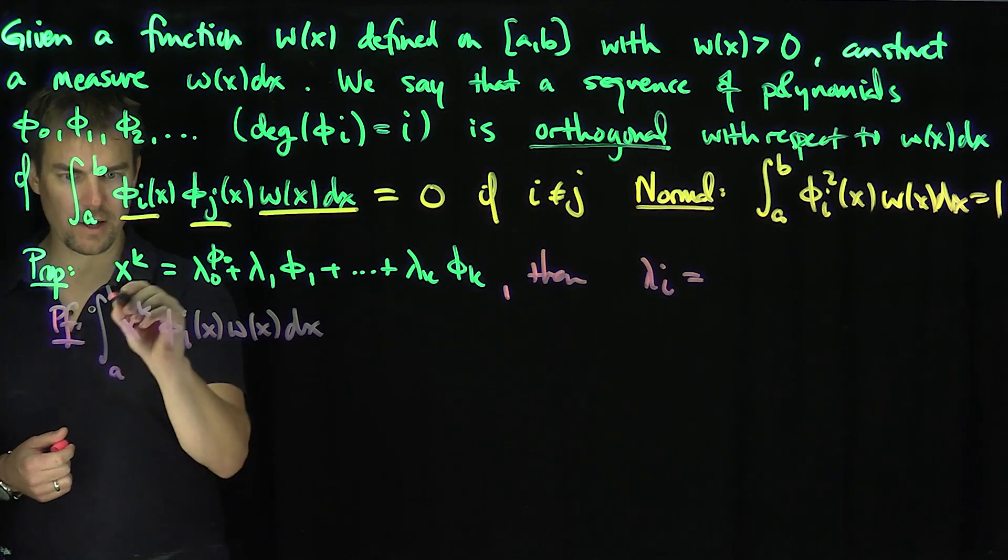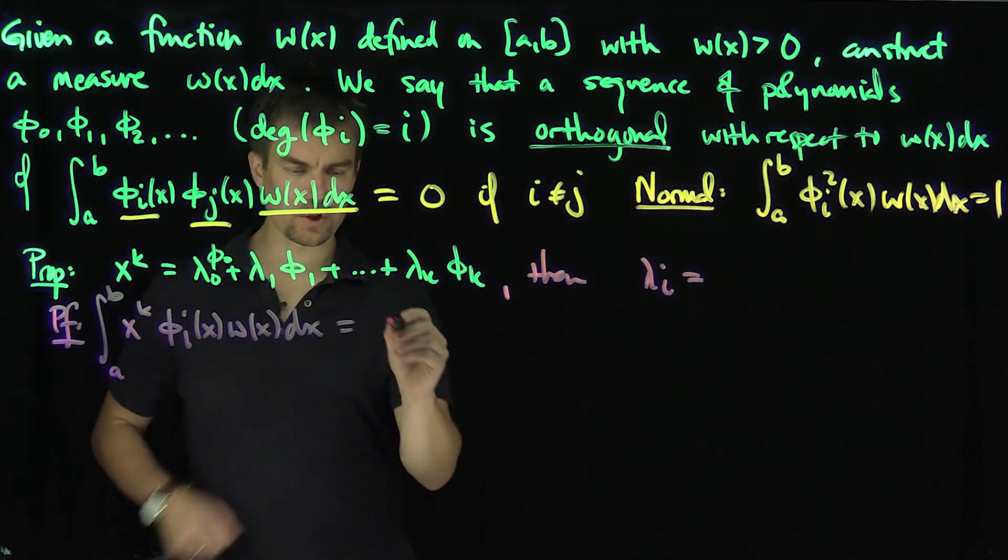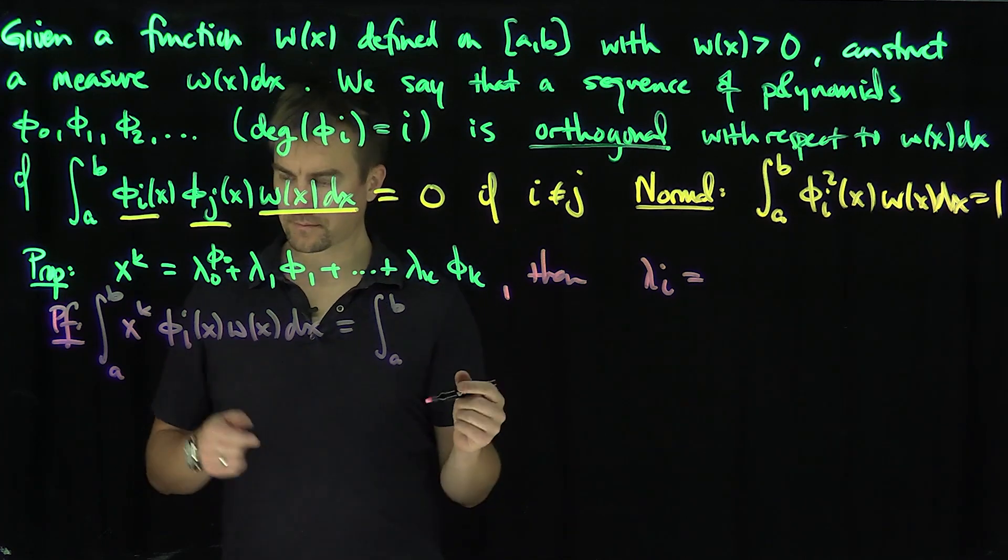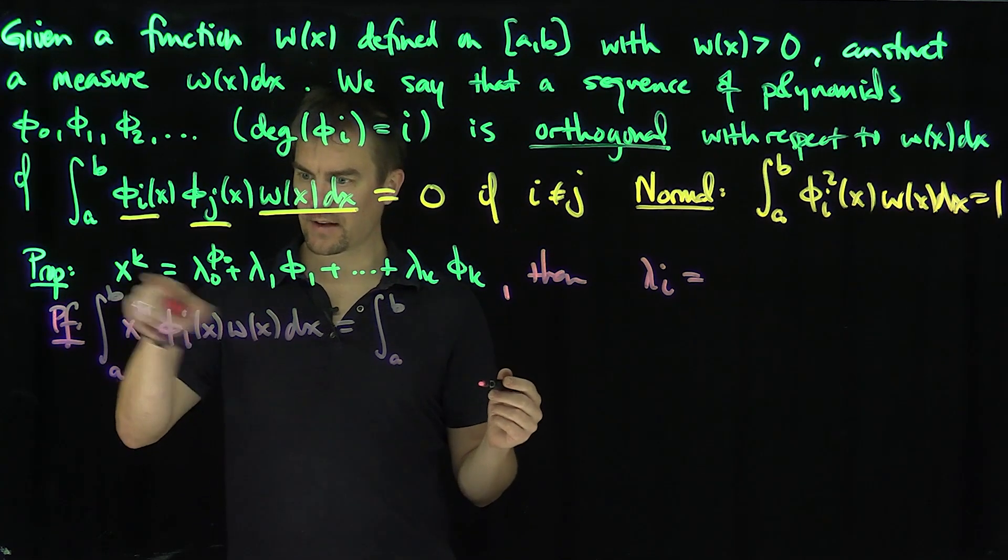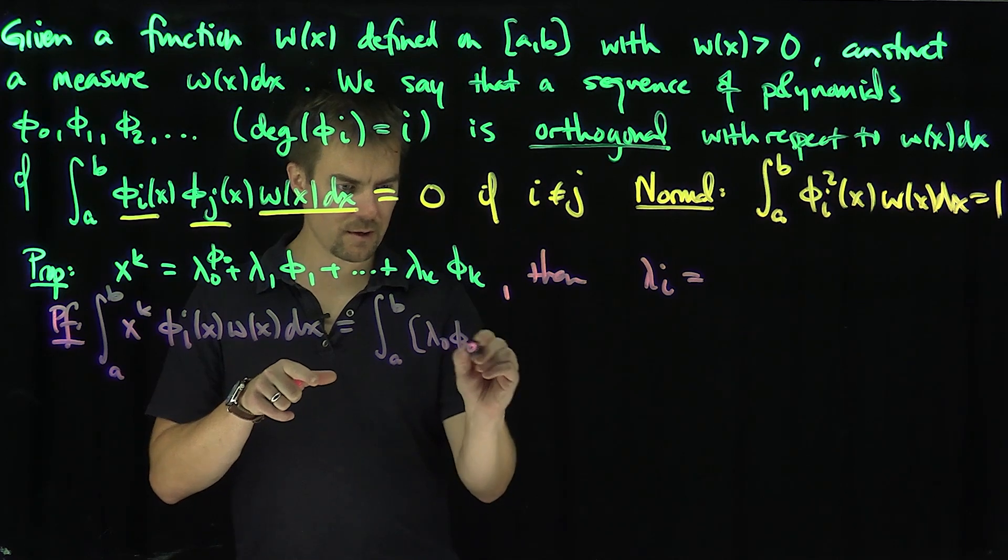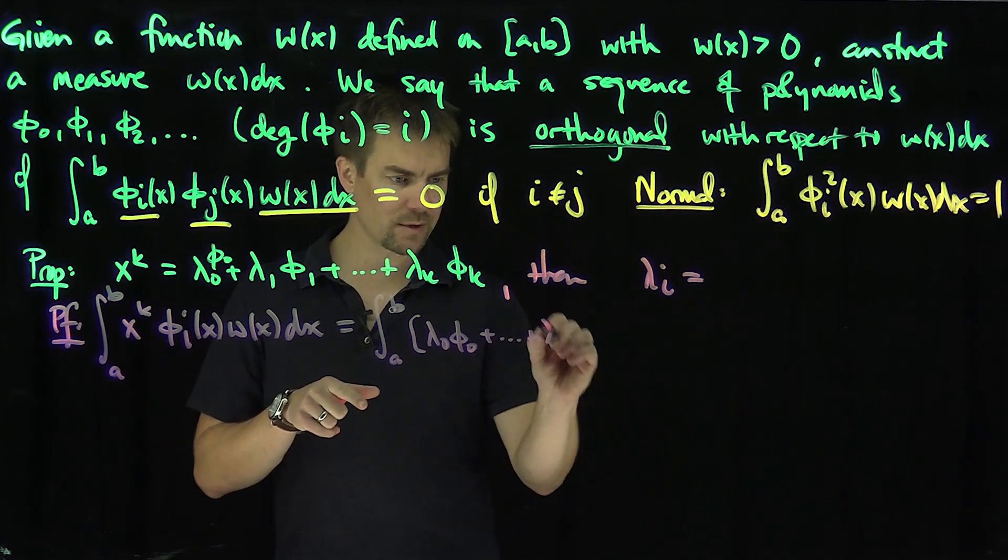If I integrate that from a to b, that's the same as integrating this whole expression, the integral from a to b of x^k. So that's the left-hand side, and then I'm going to have this whole right-hand side, λ₀φ₀ all the way down to λₖφₖ.